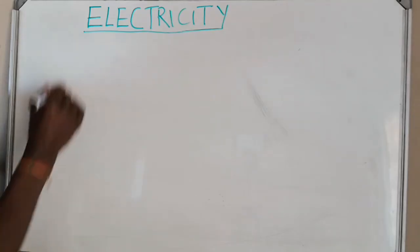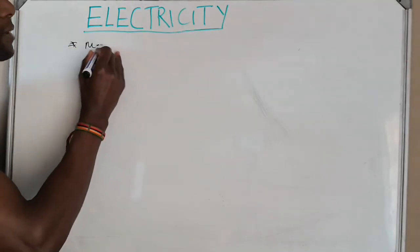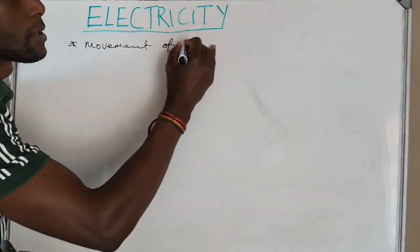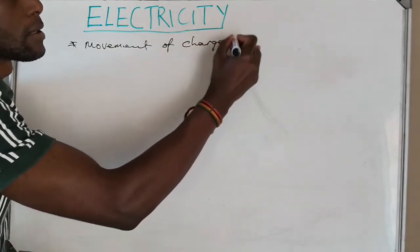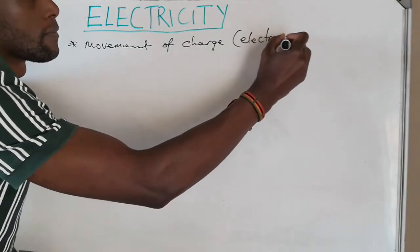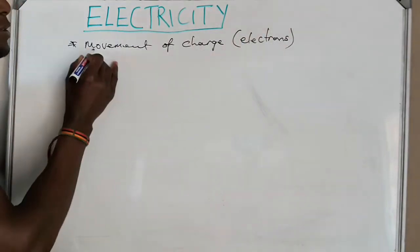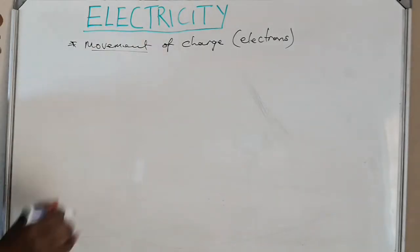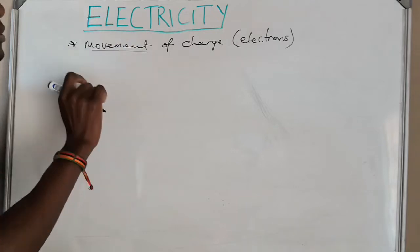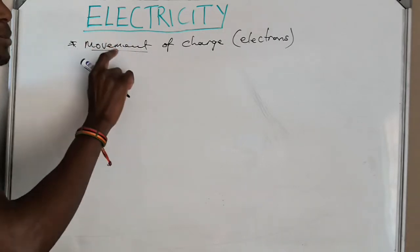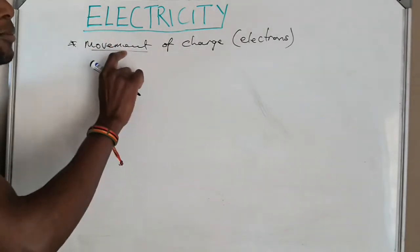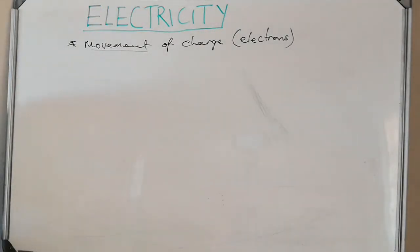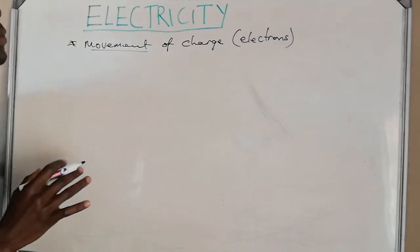So what is electricity? Electricity is movement of electrons. Electricity is movement of charge. If charge is moving then we have electricity. If charge is not moving then we do not have electricity. Electricity has to do with movement of charge, or movement of electrons as I like to put it.